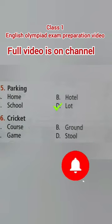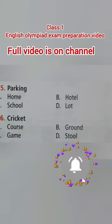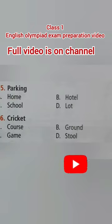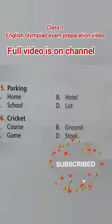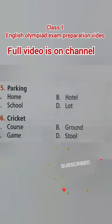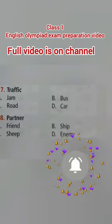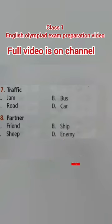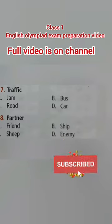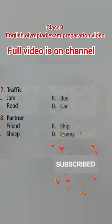Sixth: cricket. Option A: course, Option B: ground, Option C: game, Option D: stool. The right option is Option B — ground. Cricket ground. Seventh: traffic. Option A: jam, Option B: bus, Option C: road, Option D: car.